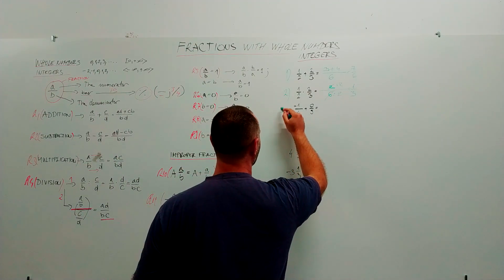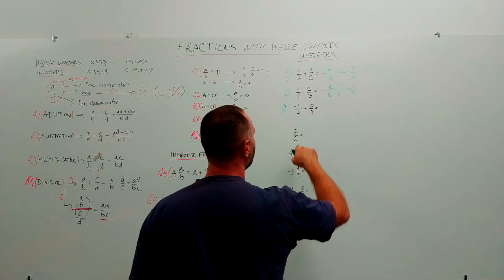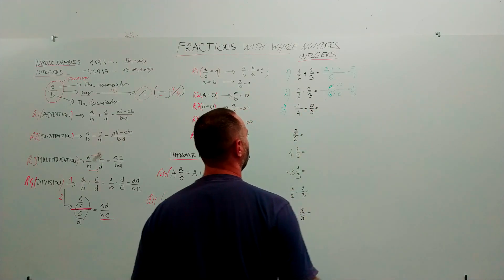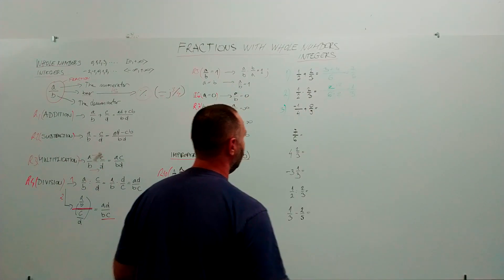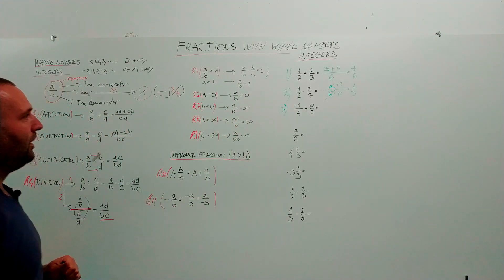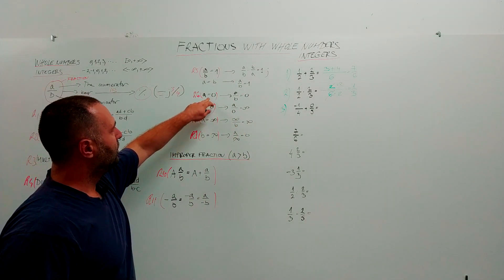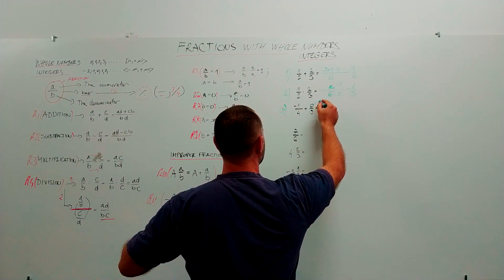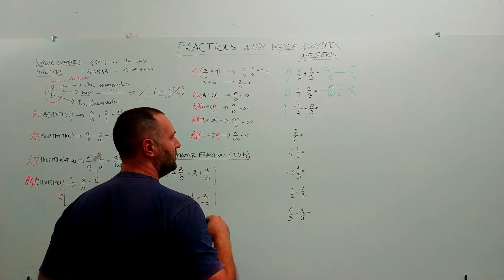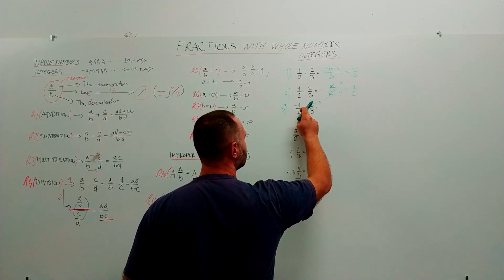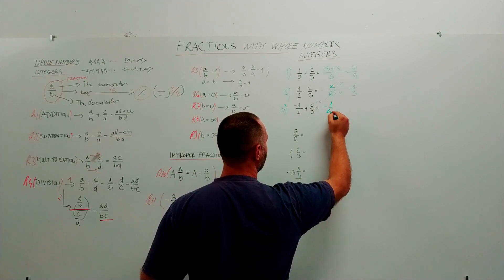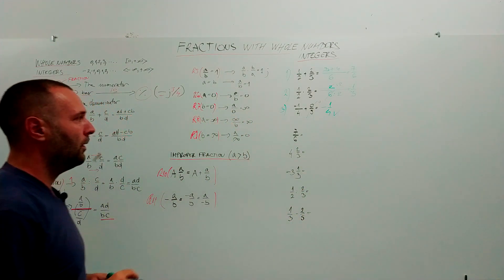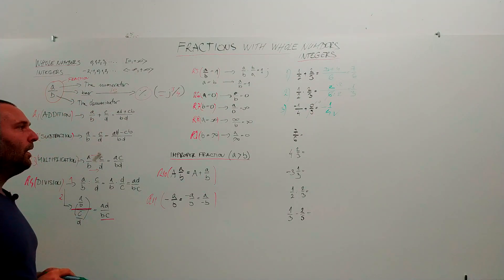The third example: minus one quarter plus zero over five. If we apply rule number six — zero over B equals zero — this part of the fraction is zero, so minus one quarter plus zero equals minus one quarter.